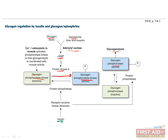On the other hand, insulin is secreted from pancreatic beta cells in the fed state when glucose is high. It activates a receptor tyrosine kinase, which causes it to dimerize, and then sets off an intracellular signaling cascade that results in the activation of two protein phosphatases. These dephosphorylate both glycogen phosphorylase kinase and glycogen phosphorylase, causing both to become inactive. Consequently, glycogenolysis does not occur, so glucose remains stored inside cells to prevent hyperglycemia.